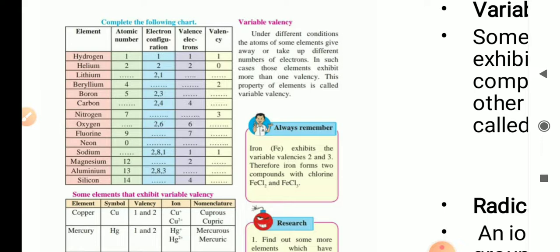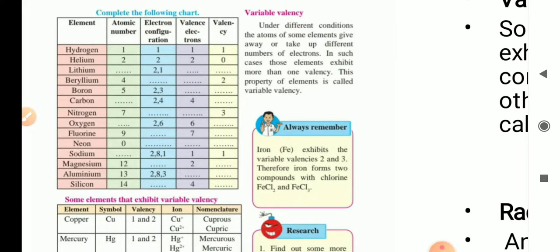Now let us go to the table, which gives element name, atomic number, electron configuration, valence electrons, and valency. Hydrogen: atomic number 1, configuration 1, valence electrons 1, valency 1. Helium: 2, configuration 2, valence electrons 2, valency 0. Lithium: atomic number 3, configuration 2,1, valence electrons 1, valency 1. Beryllium: 4, configuration 2,2, valence electrons 2, valency 2. Boron: 5, configuration 2,3, valence electrons 3, valency 3.